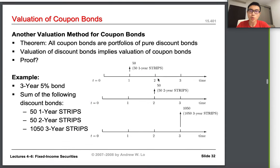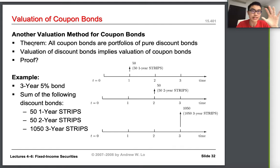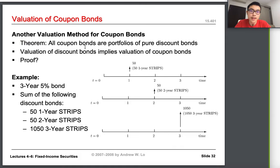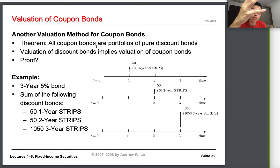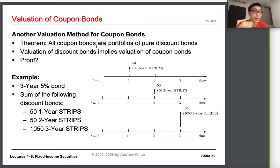Now I want you to think about valuing coupon bonds by treating them as a portfolio of continuous pure discount bonds. The theory states that all coupon bonds are portfolios of pure discount bonds. A coupon bond pays coupons at different dates and maturities rather than a single payment, so valuation of discount bonds implies valuation of coupon bonds.